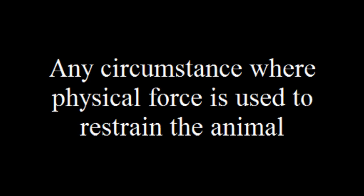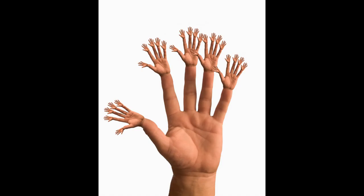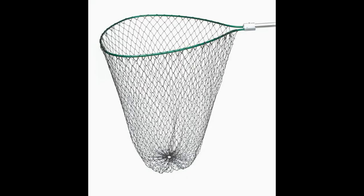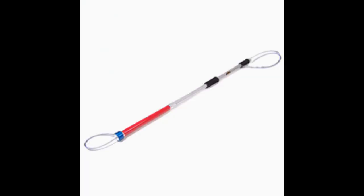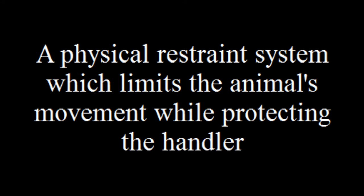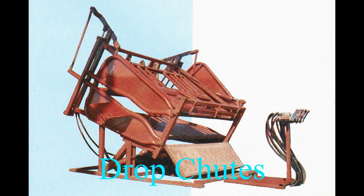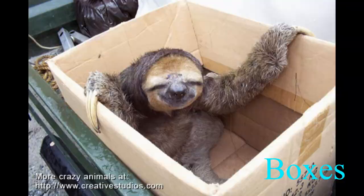Physical restraint is any circumstance where physical force is used to restrain the animal, using hands, herding boards, shields, nets, and poles. For mechanical restraint, it is a physical restraint system which limits the animal's movement while protecting the handler. We use squeeze chutes, drop chutes, boxes, and cages.